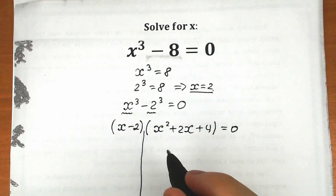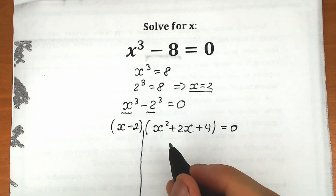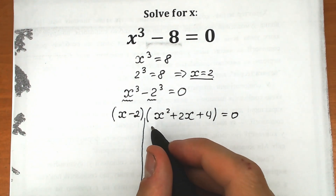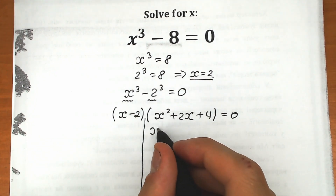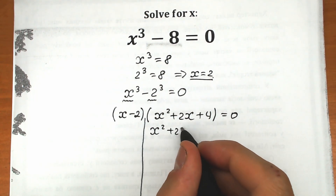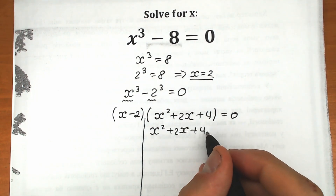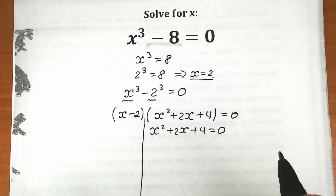Let's look at the second parenthesis: x square plus 2x plus 4 equal to 0.